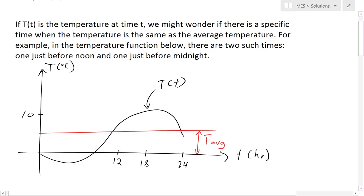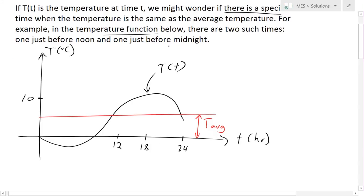Basically, if you have, let's say, a temperature T(t) at time t, we might wonder if there is a specific time when the temperature is the same as the average temperature. For example, if you look at this graph right here and this temperature function below, there are two such times, one just before noon and one just after midnight.